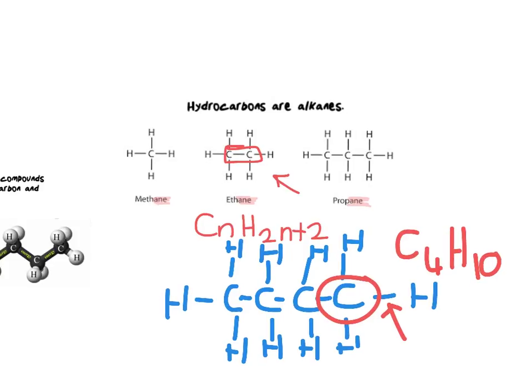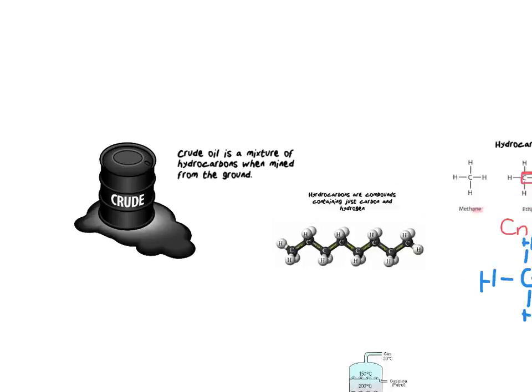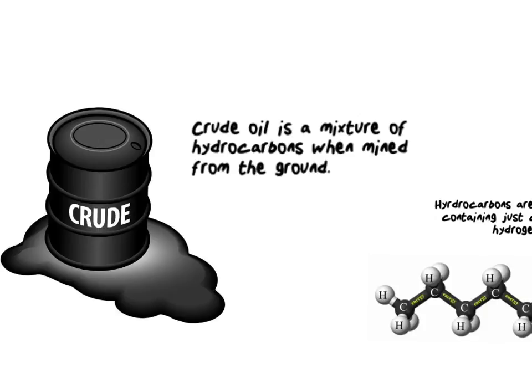Now let's think back to the beginning when we spoke about how crude oil is a mixture of different hydrocarbons. In order for us to separate out the hydrocarbons into useful fractions, for example, so that we can use them for fuel, we have to undergo a process called fractional distillation.